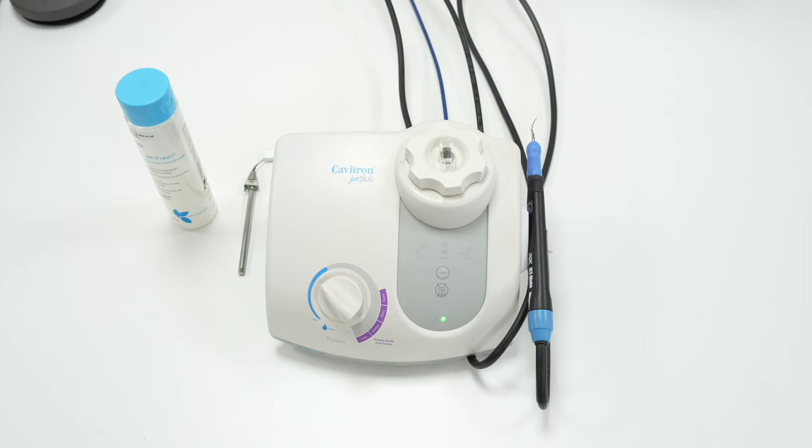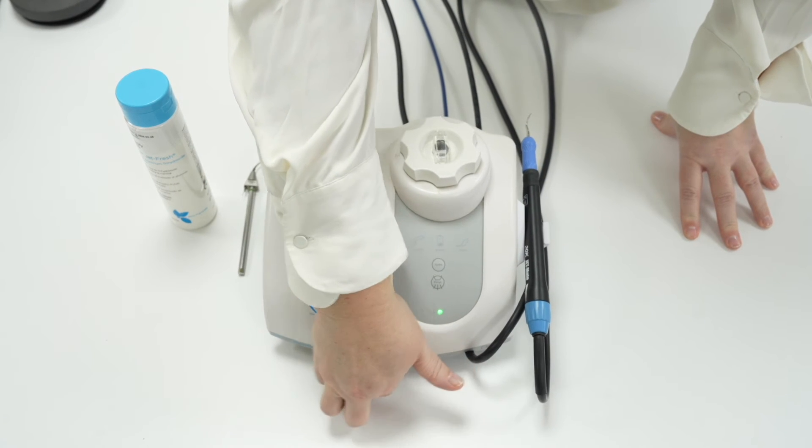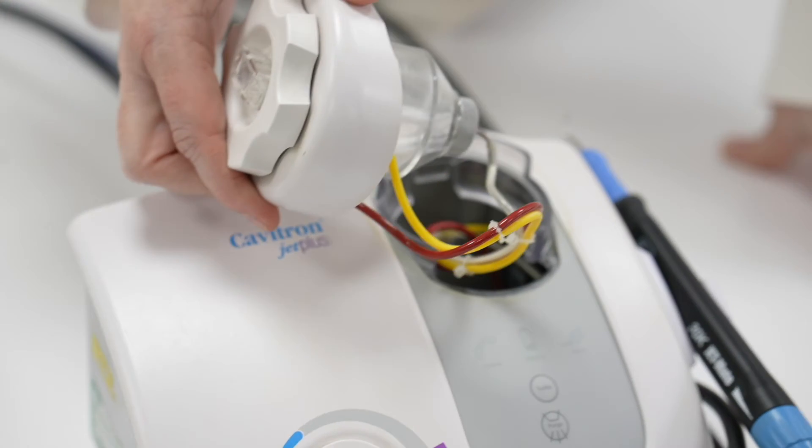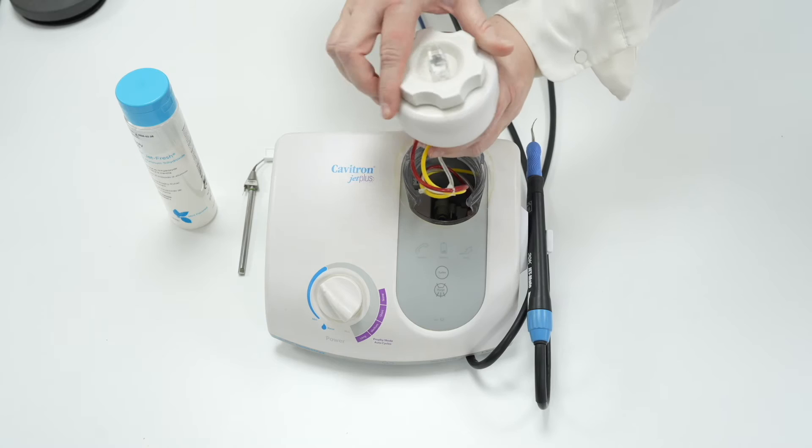To use the Cavitron Jet Plus Profi Mode, check that there is powder in the powder pot. If not, switch the Cavitron off and depressurise the powder pot and you'll hear it hiss. The powder is placed in the pot here.